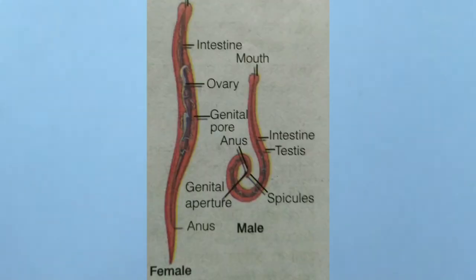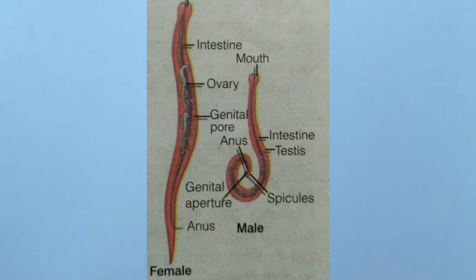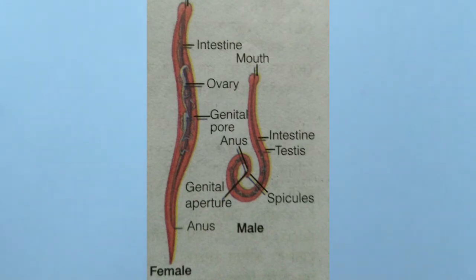Ascaris lumbricoides — the labelled diagram of Ascaris, both male and female. The male is smaller and has a twisted (curved) end, while the female has both ends straight.